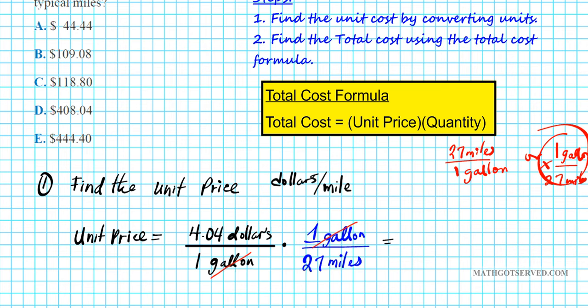So the unit price is $4.04 divided by 27, dollars per mile. If you want to put this in a calculator and find the numerical value, that's fine, but it's not necessary — we're going to leave it like this.